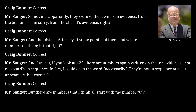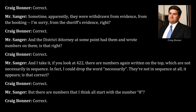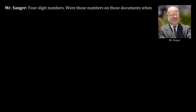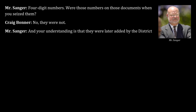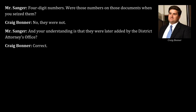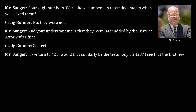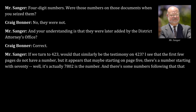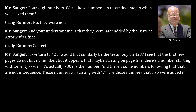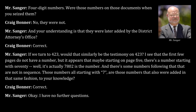If you look at 422, there are numbers again written on the top which are not in sequence at all - four digit numbers all starting with the number eight. Were those numbers on those documents when you seized them? No they were not. Your understanding is that they were later added by the district attorney's office? Correct. On 423, similarly, starting on page five there's a number 7802 and some numbers following that are not in sequence - also added in that same fashion? Correct. I have no further questions.